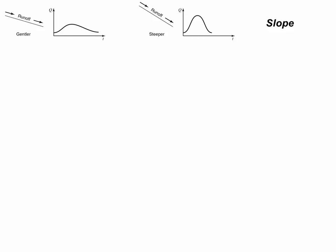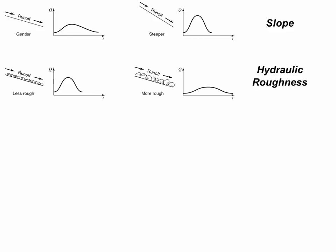Here are some different hydrograph shapes. Our models need to account for the slopes involved. If you have a steep surface slope, the peaks arrive more quickly and they're higher. If I gave you a quiz asking about two different surface slopes, the two characteristics I'd look for are: with a steeper surface slope, the peak arrives more quickly and the peak is higher, because more of the water arrives at the outlet at roughly the same time.